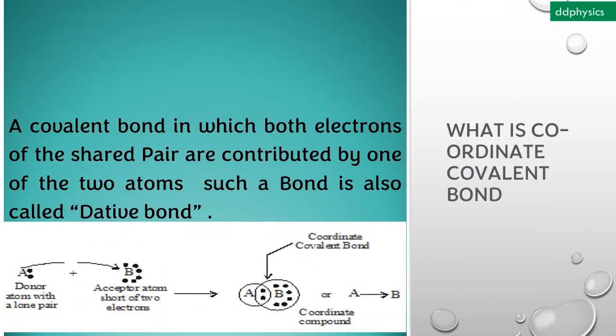What is coordinate covalent bond? A covalent bond in which both electrons of the shared pair are contributed by one of the two atoms. Such a bond is also called dative bond.